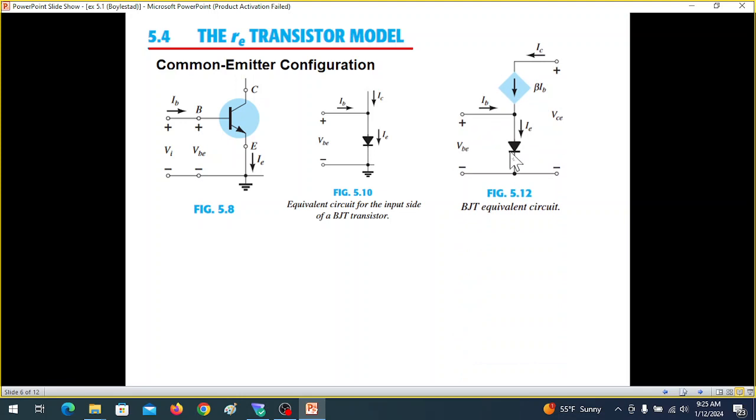We can further draw the equivalent circuit where the collector current can be replaced by a current source IC, which is actually equal to beta times IB. We know IC is equal to beta times IB. Further simplification is that we replace the diode by its equivalent resistance. The diode is replaced by an equivalent resistance. We call it RE. So this is the RE model.